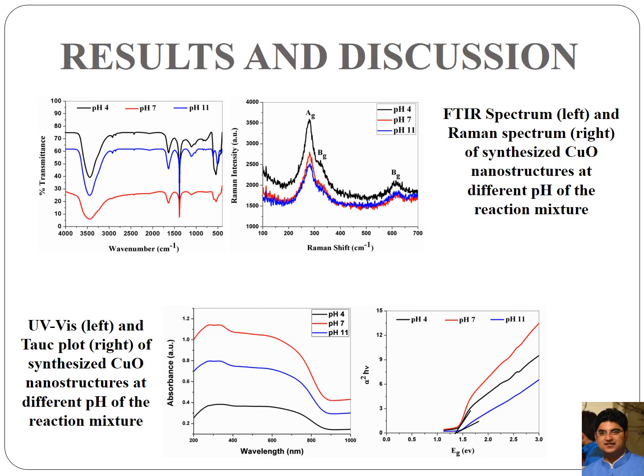Copper oxide is a low band gap semiconductor, so we need to find out the band gap of the synthesized copper oxide nanostructures at different pH values. UV-visible spectroscopy and Tauc plot was also plotted. From the UV-visible spectroscopy we can see a broad hump from 800 to 200 nm, which is characteristic of copper oxide nanostructures. The tangent to the Tauc plot at which alpha squared times h-nu equals zero gives the band gap, calculated to be approximately 1.38 eV, which is in accordance with the standard bulk band gap of copper oxide.